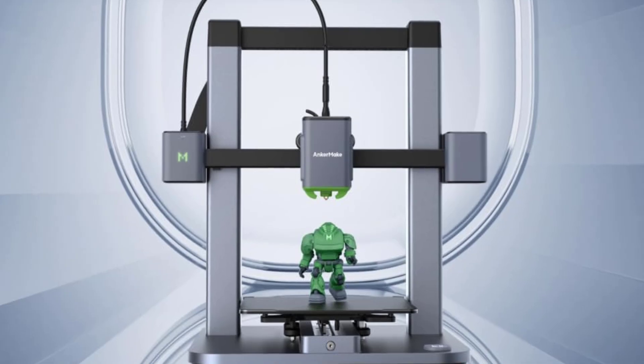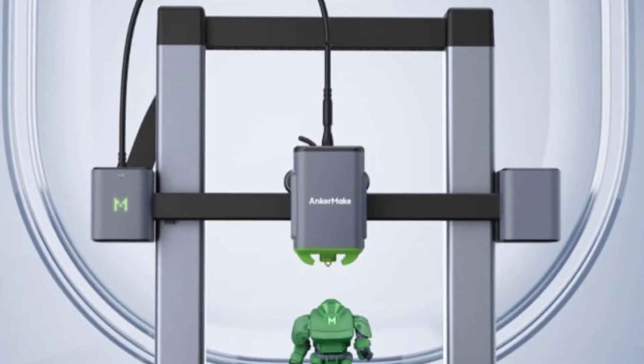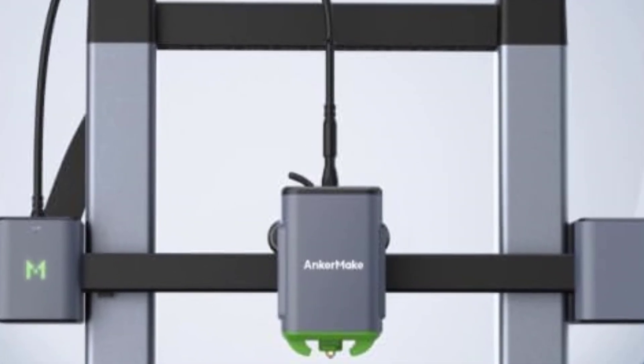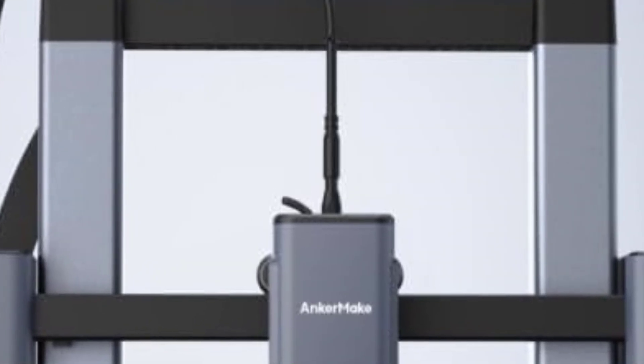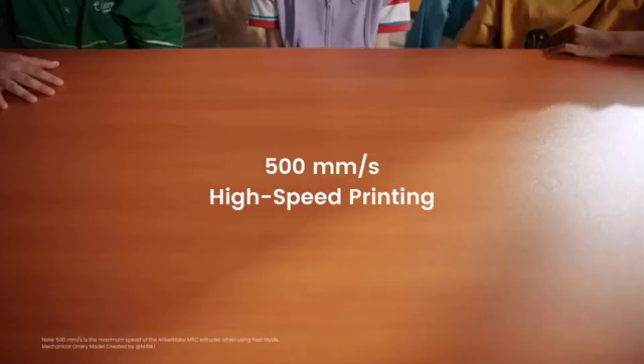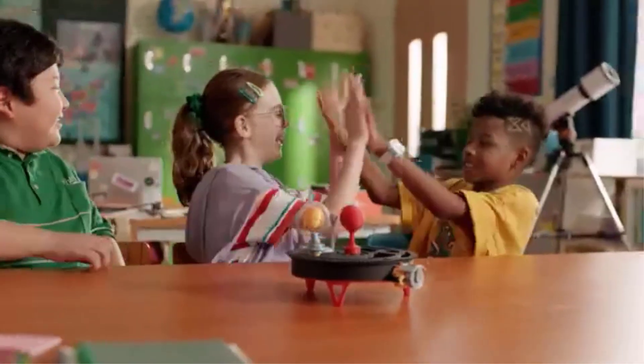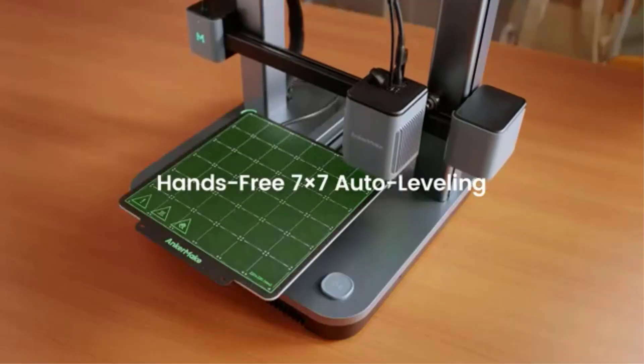The printer also offers multi-device control, allowing users to manage print jobs via various devices like smartphones, tablets, or computers, adding flexibility and ease of use. The 220x220x250mm print volume is ample for creating a wide range of objects, from smaller prototypes to medium-sized models. With its intuitive interface, the M5C is designed for an effortless user experience, even for those new to 3D printing.